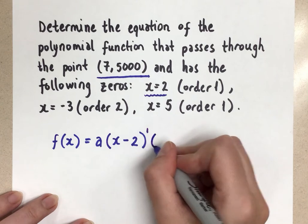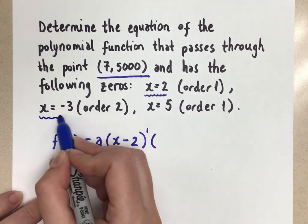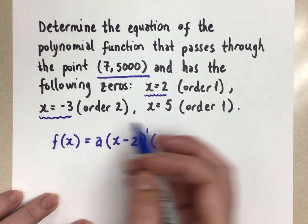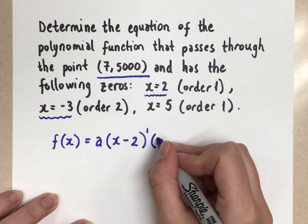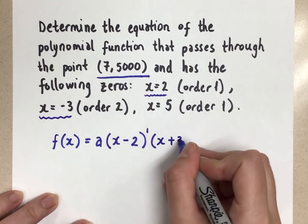Okay, our next factor, we're looking at this zero, x equals negative 3. So if the zero is negative 3 in the factor, it'll be x plus 3. Again, you can check. If you plug in negative 3 for x,